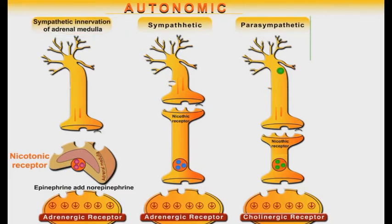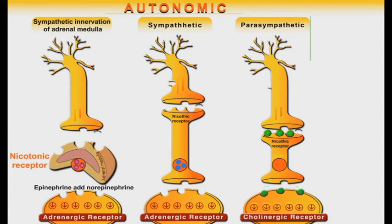In the parasympathetic system, the action potential stimulates the release of acetylcholine molecules from the preganglionic nerves into the nicotinic receptors at the postganglionic nerves. This binding results in a cascade of reactions that end in the release of new acetylcholine molecules from the neurons into the synapses with their effector organs. The released acetylcholine molecules bind to the cholinergic receptors and induce a series of different biological effects.